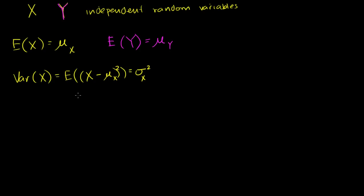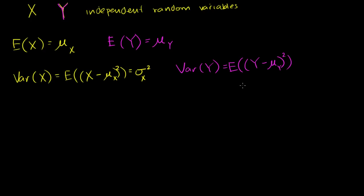I just want to reintroduce this because I'll use it to build up some of our tools. You do the same thing with random variable y: the variance of y is the expected value of the squared deviation of y from its mean, and that's the same thing as sigma squared of y — the variance of y.